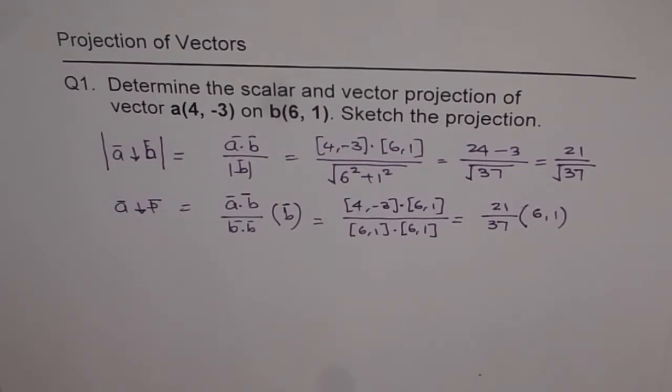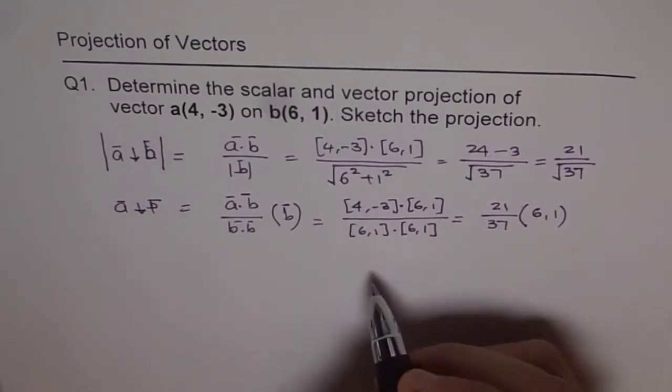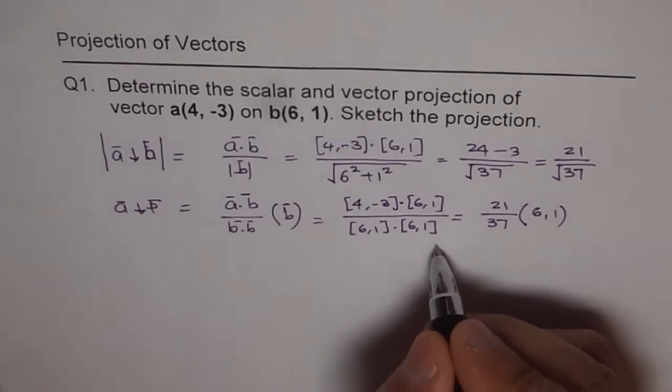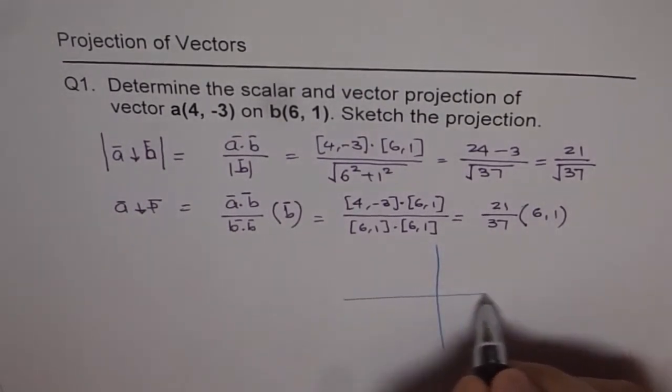Now that's the first part. So next part is sketch the projection. Now that's kind of interesting. So we have two vectors here and I can plot them on Cartesian coordinate plane.